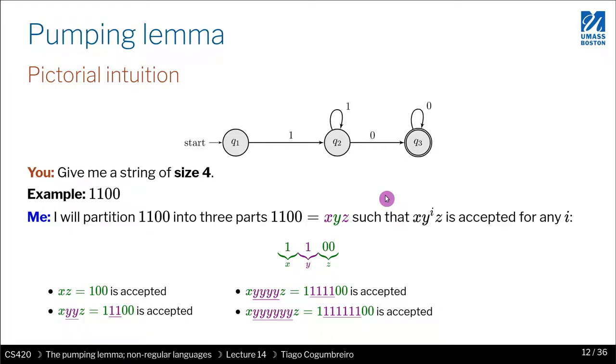So we say that for instance 1100 is in the pump of the language, where P would be 4 in that case.